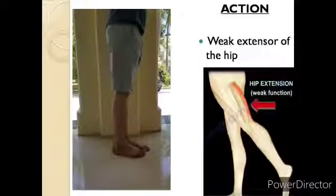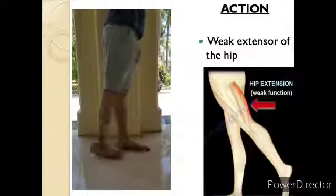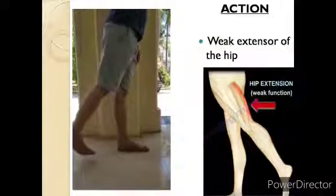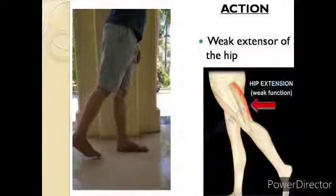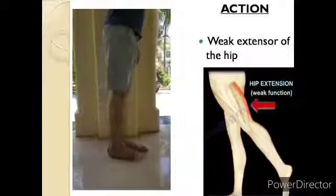Semimembranosus muscle is also a weak extensor of the hip. I hope you now know about the origin, insertion, nerve supply, and actions of semimembranosus muscle. Thank you for listening.